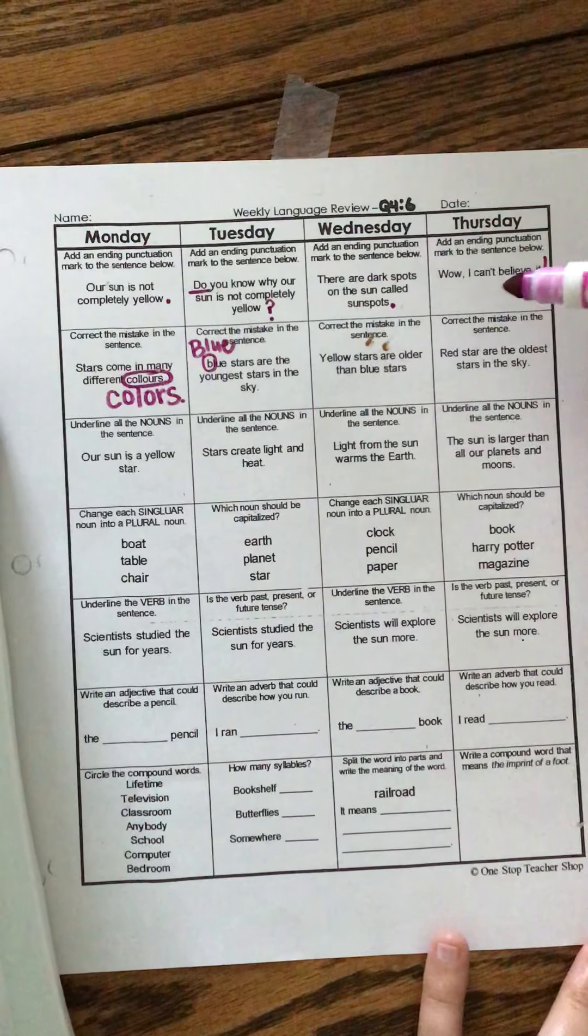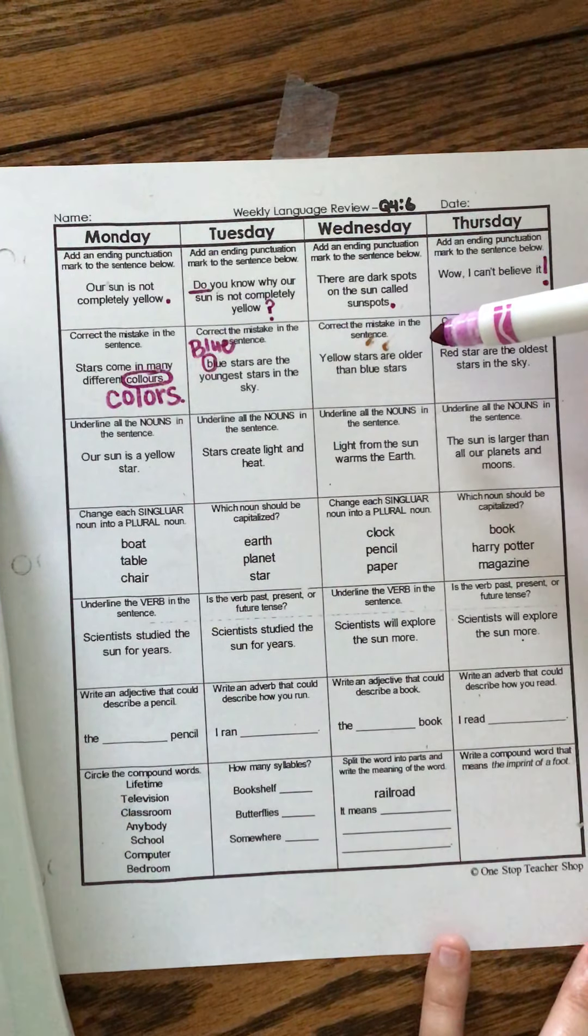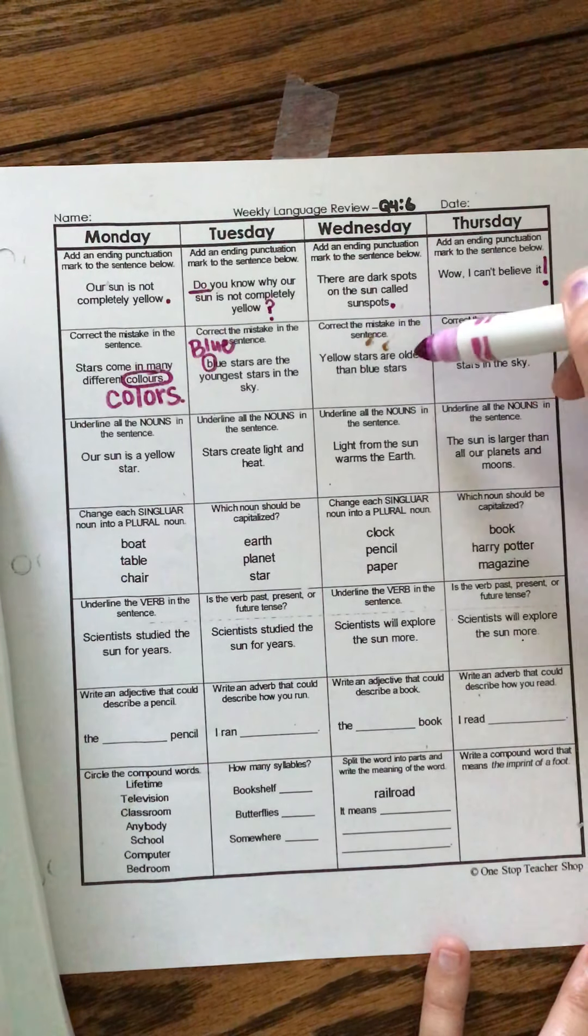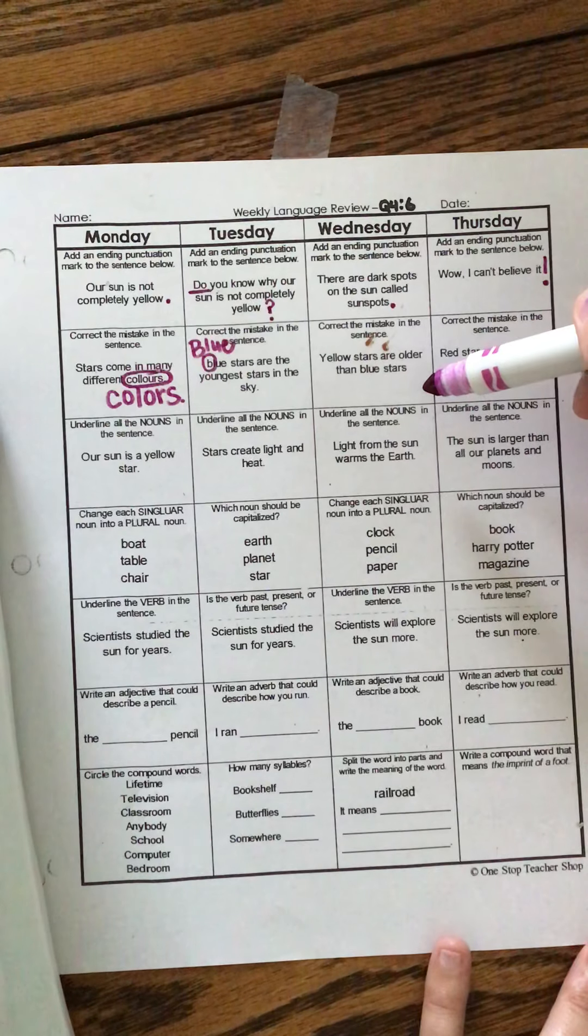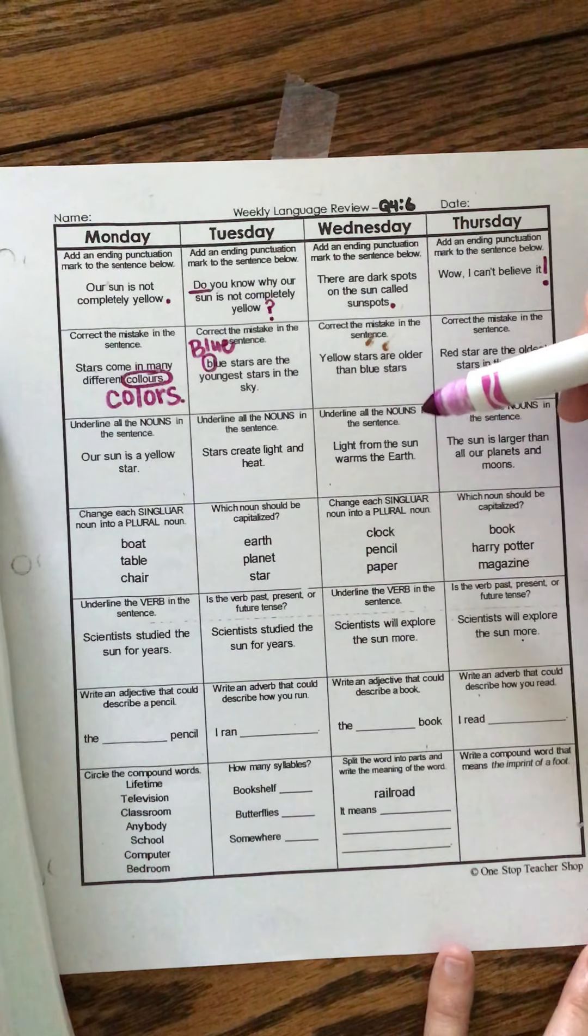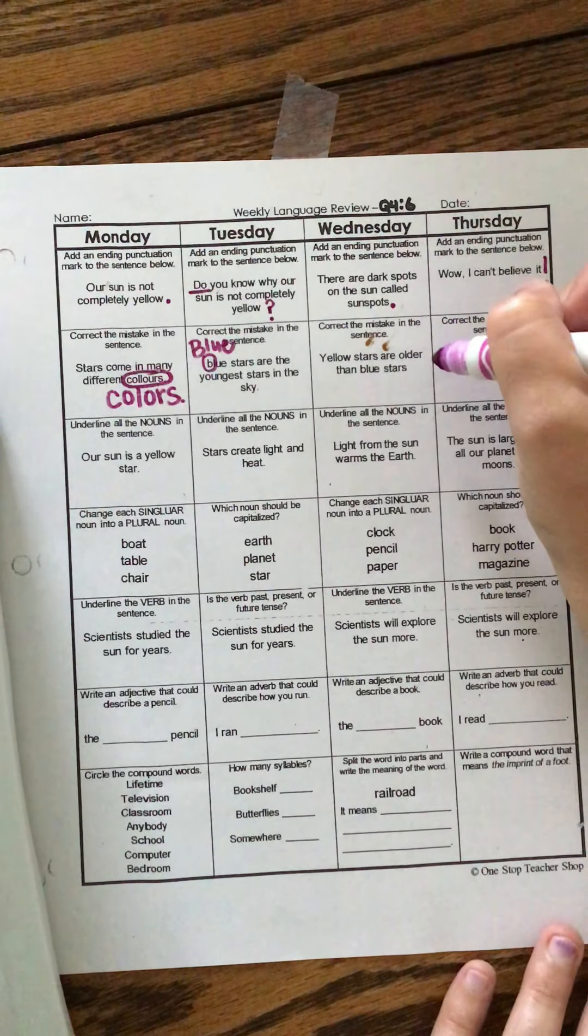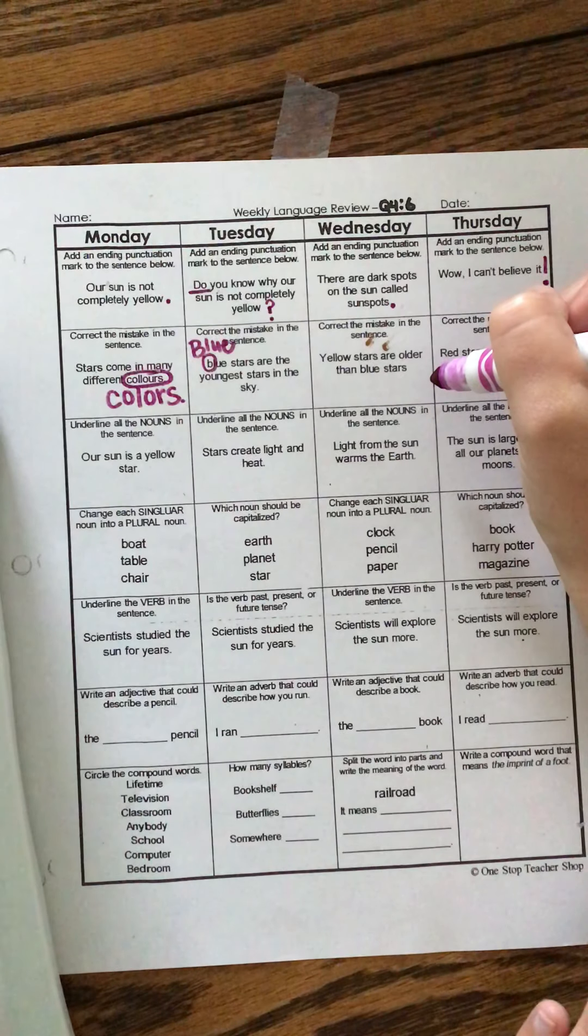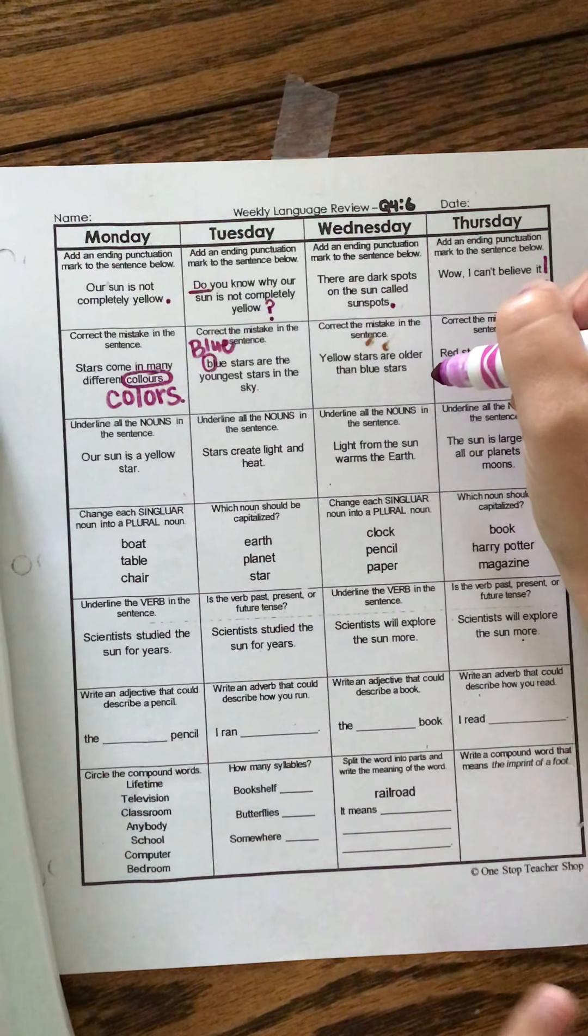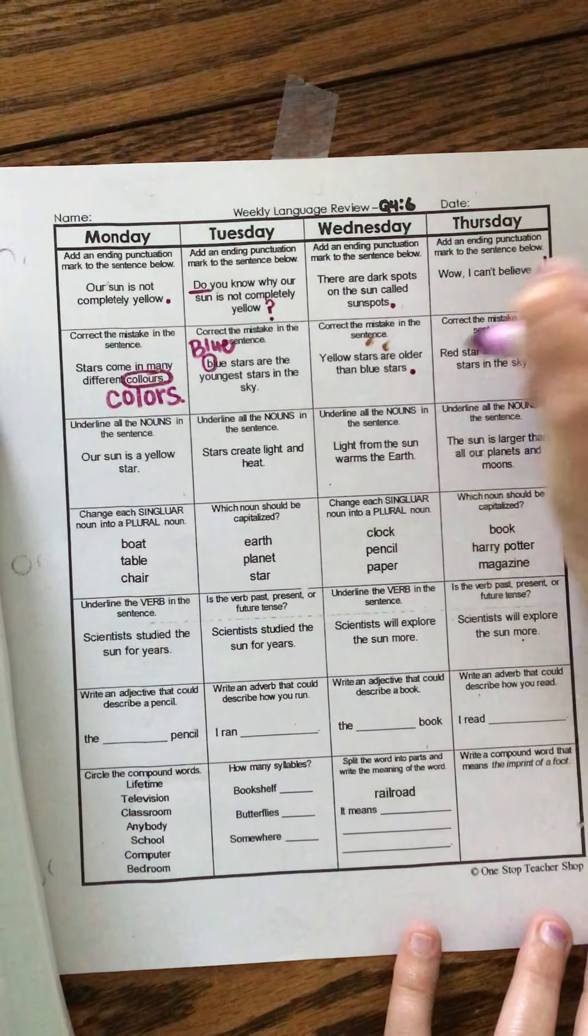Alright. Correct the mistake in the sentence. Yellow stars are older than blue stars. Well, everything is spelled right. And it's got a capital letter at the beginning. Oh, there's not an ending. Okay. Yellow stars are older than blue stars. Is that an exciting sentence? Did we read it with a lot of emotion? No. Did they ask us a question? No. So we're just gonna put a period.